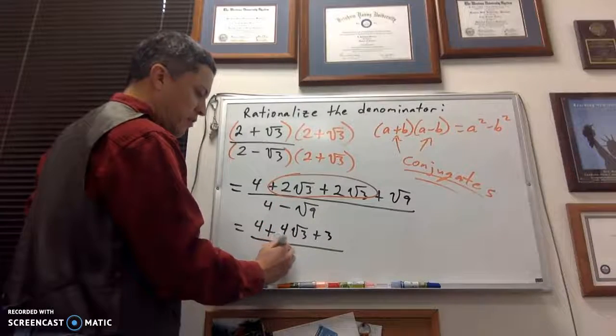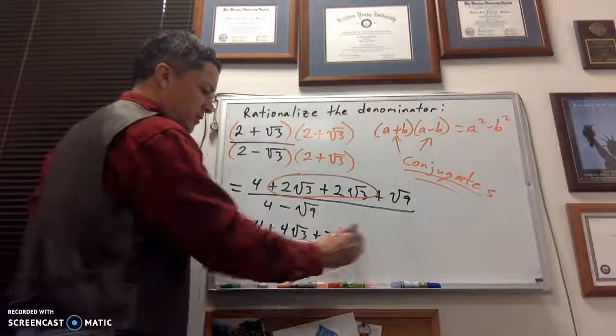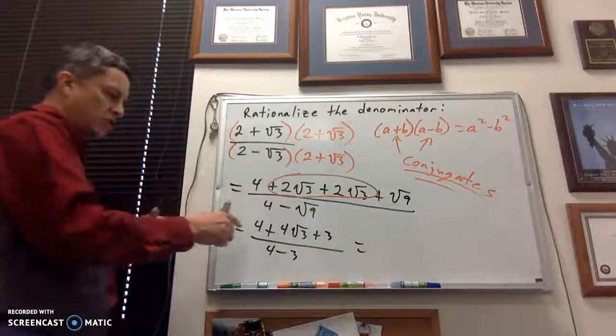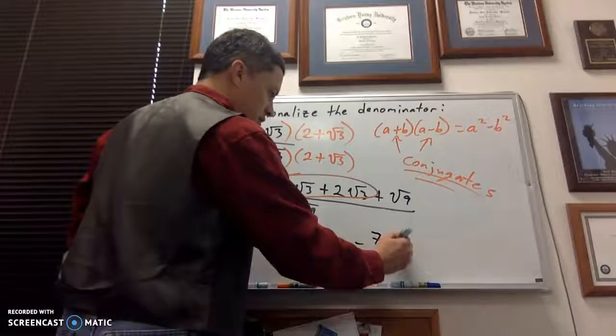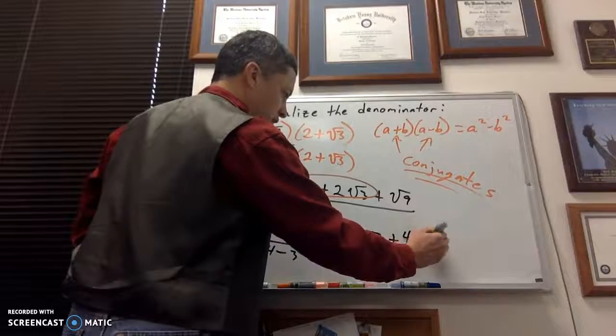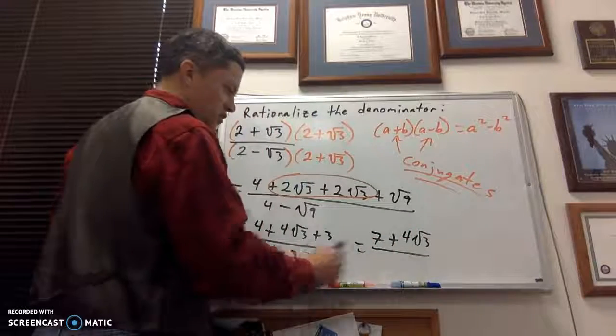Plus the square root of 9 is 3. Downstairs in the denominator, I've got 4 minus the square root of 9 is 3. So let's combine like terms. 4 plus 3 is 7 plus 4 root of 3 over 4 minus 3, which is 1.